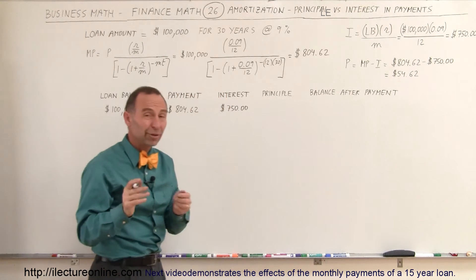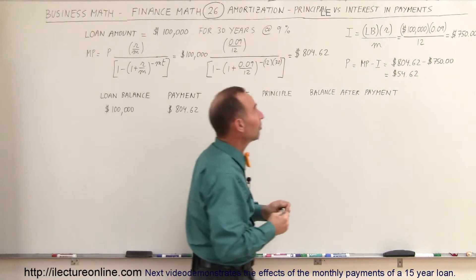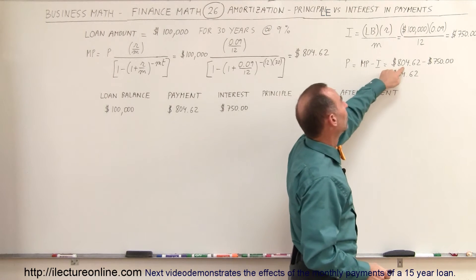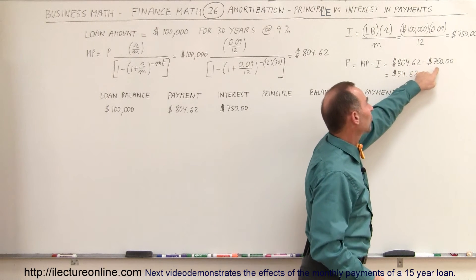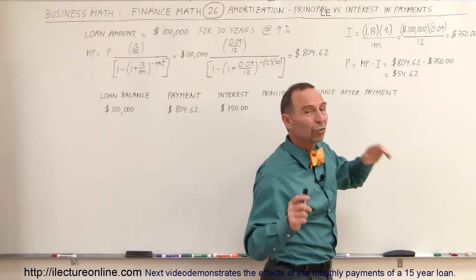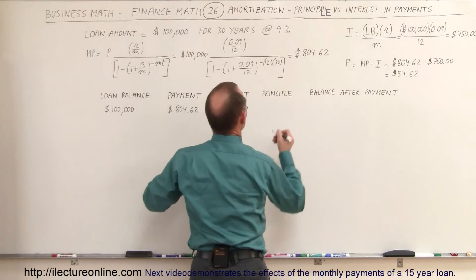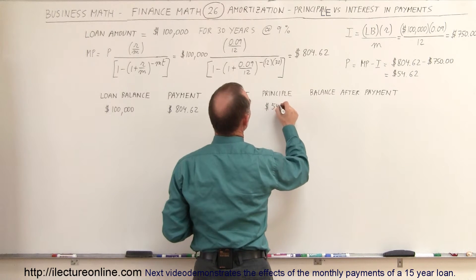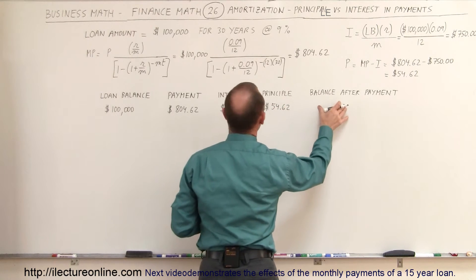The principal, how much will go to principal paying off the loan? The principal will be the monthly payment minus the interest payment. So the monthly payment is this much. That's how much we pay for interest. The difference is what we pay into principal. Therefore, the principal payment on the first month will be $54.62.